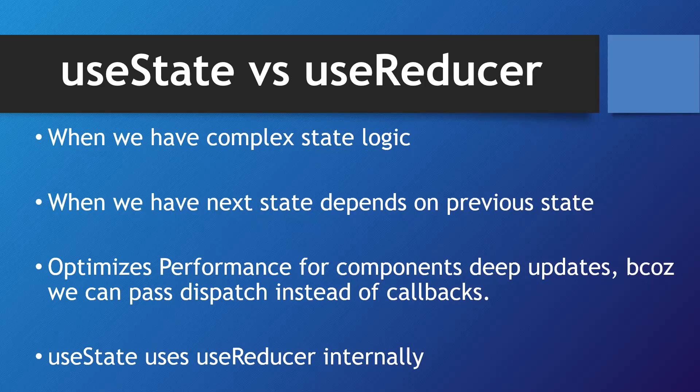The first thing is when to use useReducer. When the state has complex logic, you can use useReducer. If your next state is dependent upon the previous state, you can also use useReducer. Also, whenever you want to improve the performance — for example, with deep component updates — we can send the dispatch method instead of callback functions. This will improve component performance, and that we can do with useReducer.